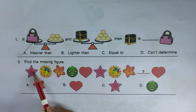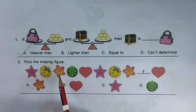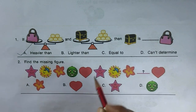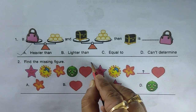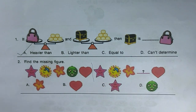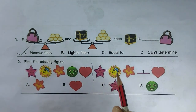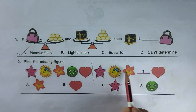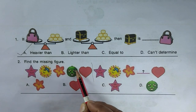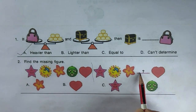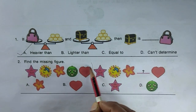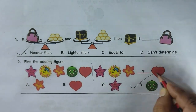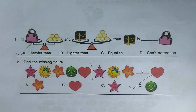Next question: find the missing figure following the pattern — star, sun, flower, green face, heart — and this repeats. Star, sun, flower — so the green face will come next in the missing position. Hence option D is the right answer.